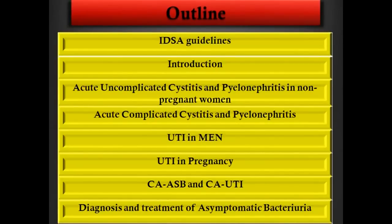This is the outline. We will talk about the IDSA guidelines — there are three guidelines that apply to urinary tract infections. A brief introduction, one guideline about acute uncomplicated cystitis and pyelonephritis in non-pregnant women, complicated and uncomplicated UTI, UTI in men, UTIs in pregnancy, catheter-associated asymptomatic bacteriuria and catheter-associated UTIs — mostly in nursing home or hospital patients — and diagnosis and treatment of asymptomatic bacteriuria.